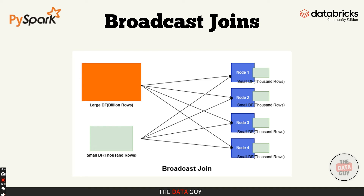Instead of shuffling both data frames to perform the join, Spark sends the smaller data frame to every node in the cluster. That way, each worker node can perform the join locally with the broadcasted data, with no expensive shuffle. This is super efficient when one of your data frames is small enough to fit into memory on each worker node. For example, imagine you have two data frames — one large with a billion rows, and one small with a few thousand rows. With a regular join, Spark shuffles both across the cluster. But with a broadcast join, Spark sends a copy of the smaller data frame to each worker node, so every node can join it locally, avoiding the shuffle altogether. As shown in the diagram, the small data frame is sent to all worker nodes via broadcasting.